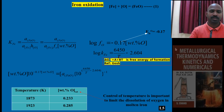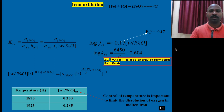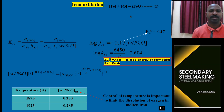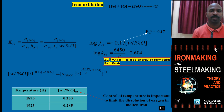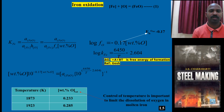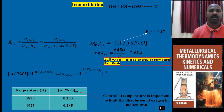Welcome to Secondary Steelmaking Process. Today I am going to talk about Iron Oxidation, Silicon Oxidation, and Manganese Oxidation. By following Raoult's and Henry's Law, how does oxygen dissolve and what is the content dissolved? And how much iron is lost in the form of slag, such as Manganese and Silicon. By applying Raoult's and Henry's Law, you can calculate in terms of weight percentage and mole fraction.